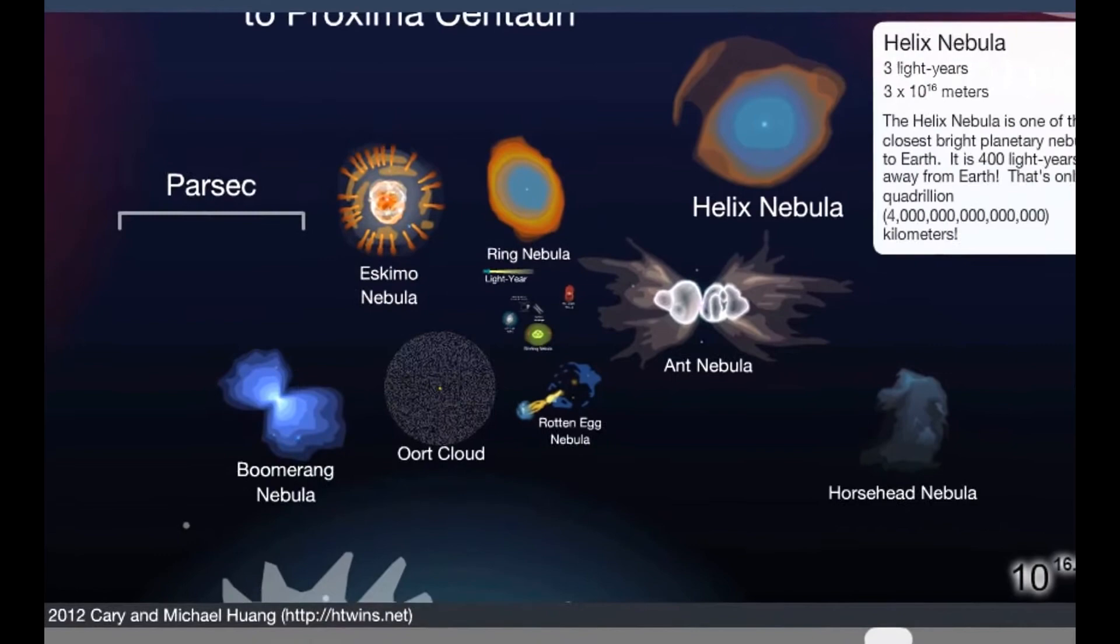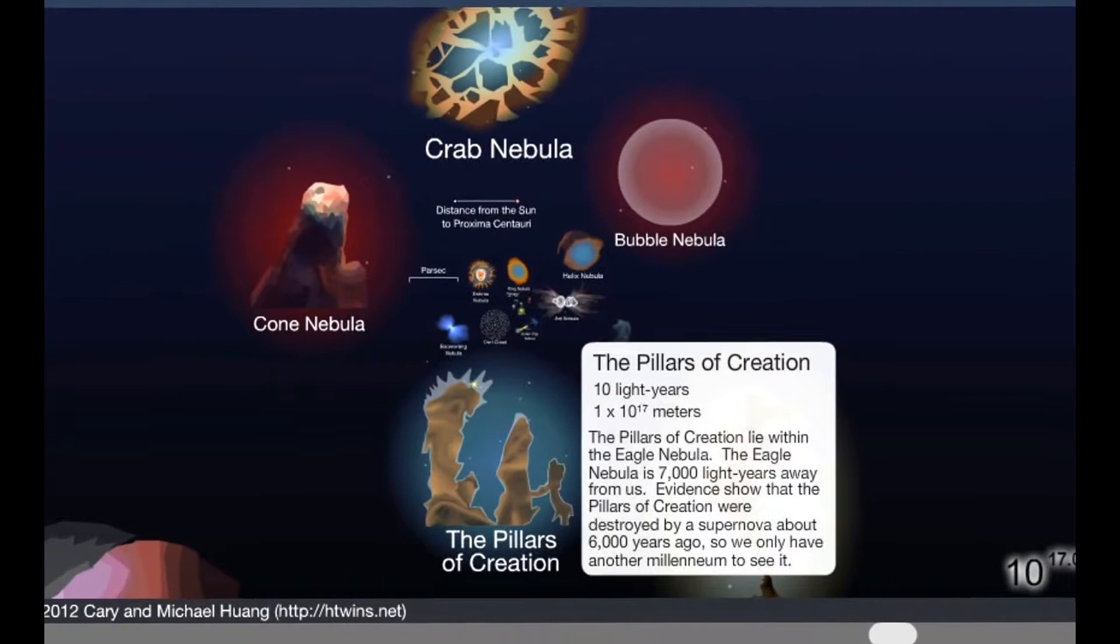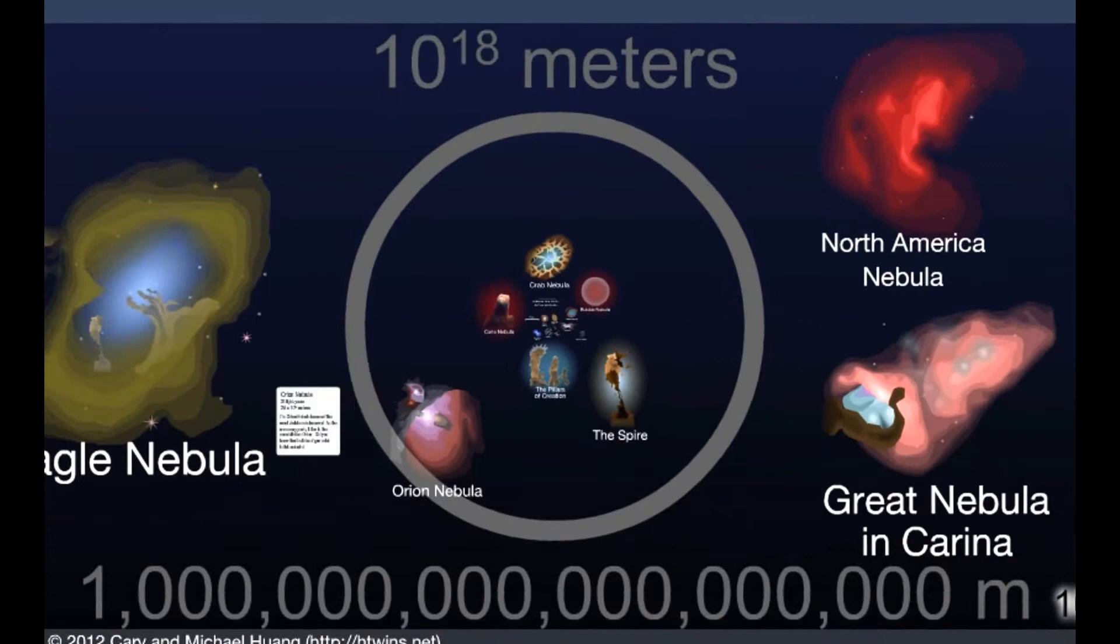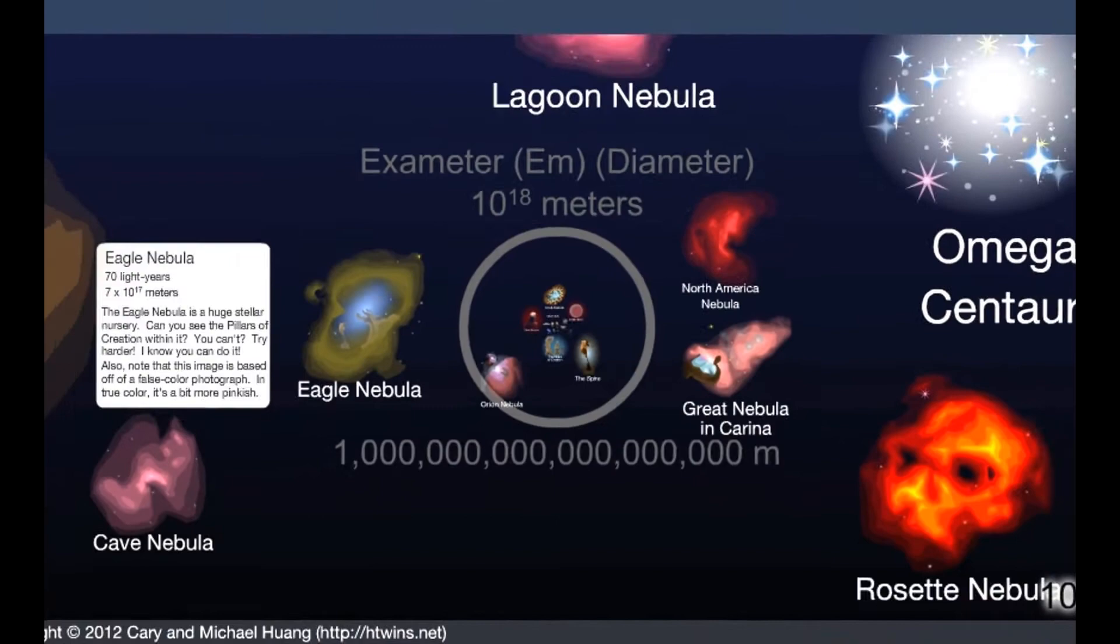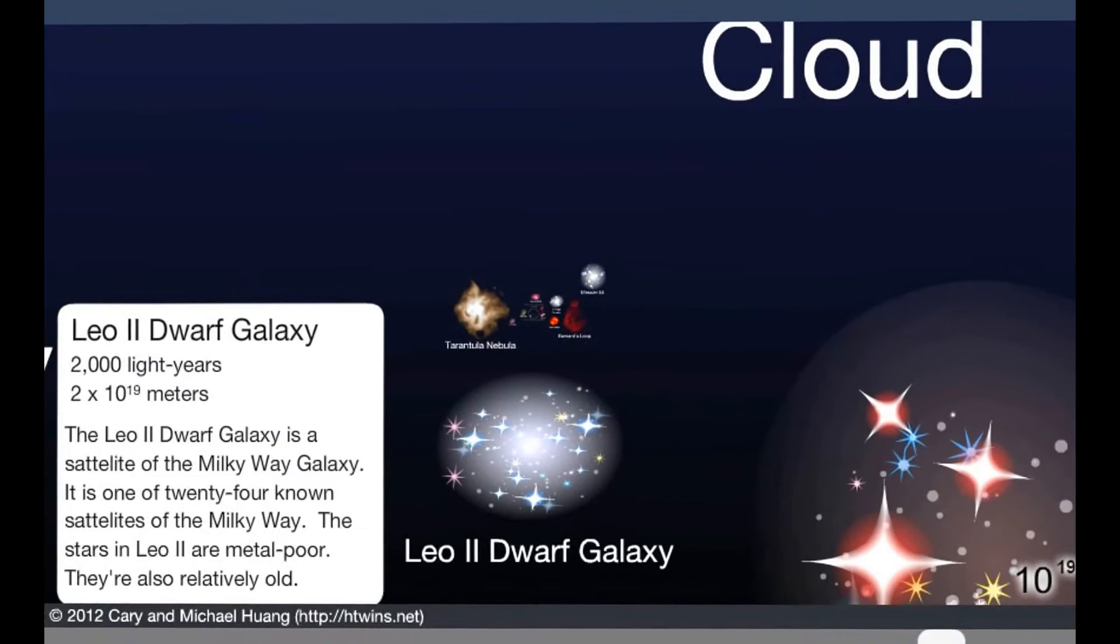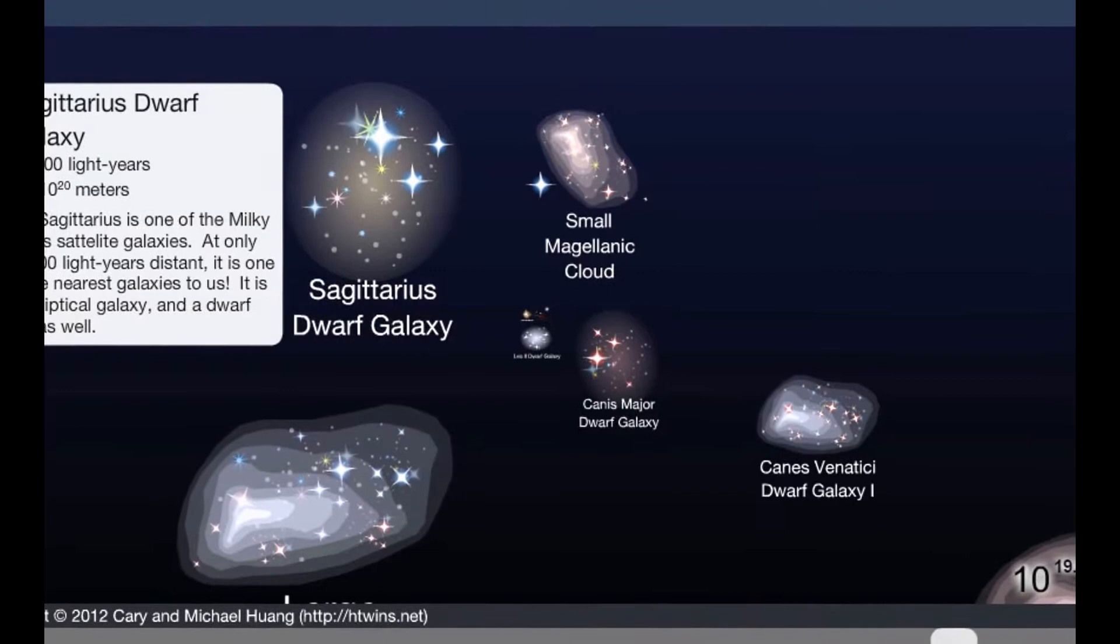Oh, dude. And you see pictures of these? These clouds in space? And they look so small and so beautiful. Don't they? But look at how freaking big they are. It just keeps going and going. Oh, it's so cool. Oh my God. It just keeps going. Leo 2 Dwarf Galaxy. Small Magellanic Cloud. It just keeps going. It will not stop.